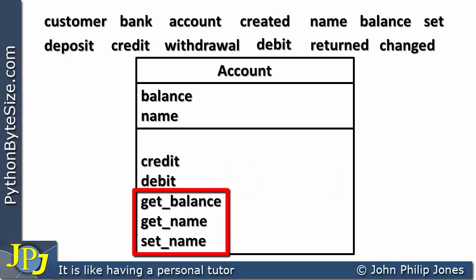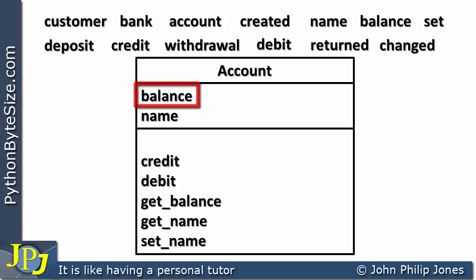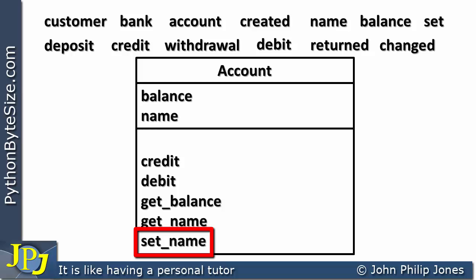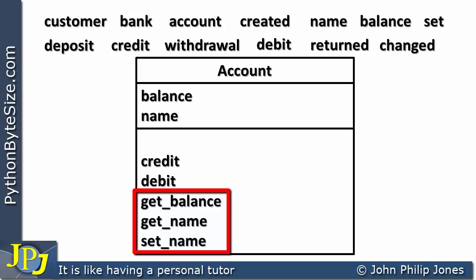Now I've got three more methods: 'getBalance', 'getName', and 'setName'. getBalance is going to return whatever the balance is at any particular time, and getName is going to return the name of the customer. setName is the method that allows me to change the name of the customer. These three methods belong to the classic way in which object-oriented programs are written, though within Python these types of get and set methods are often not used — but I'll talk about that in later videos.